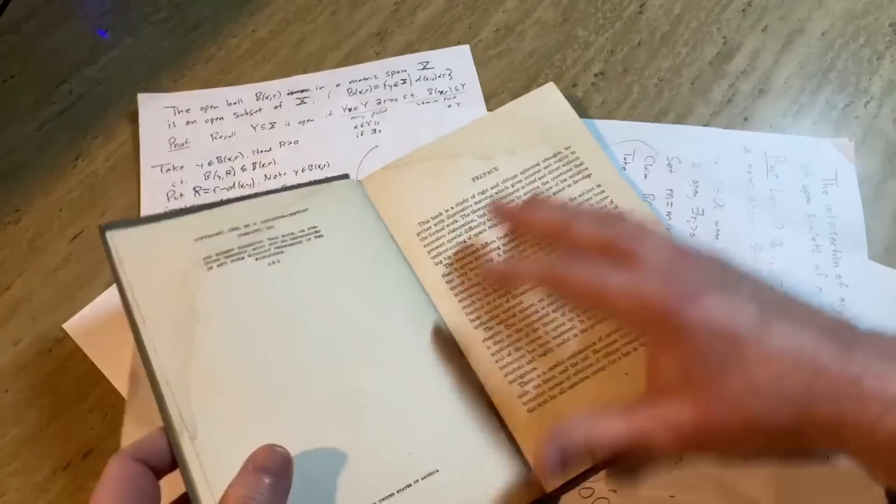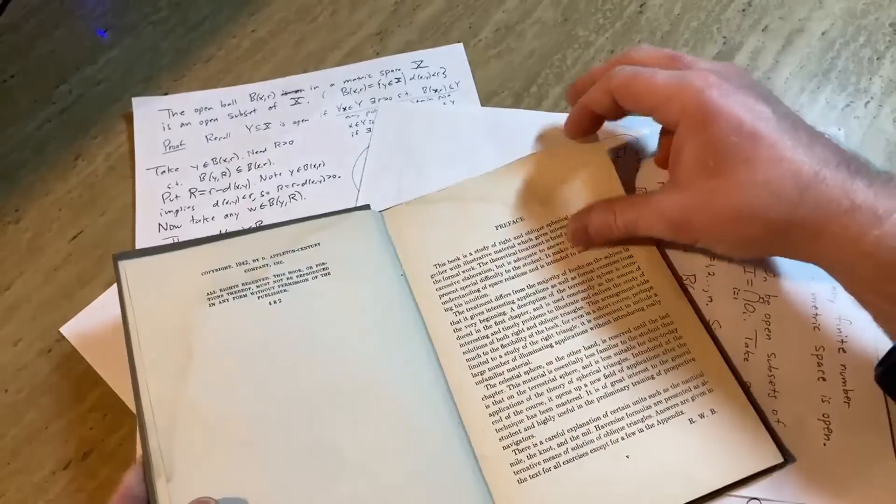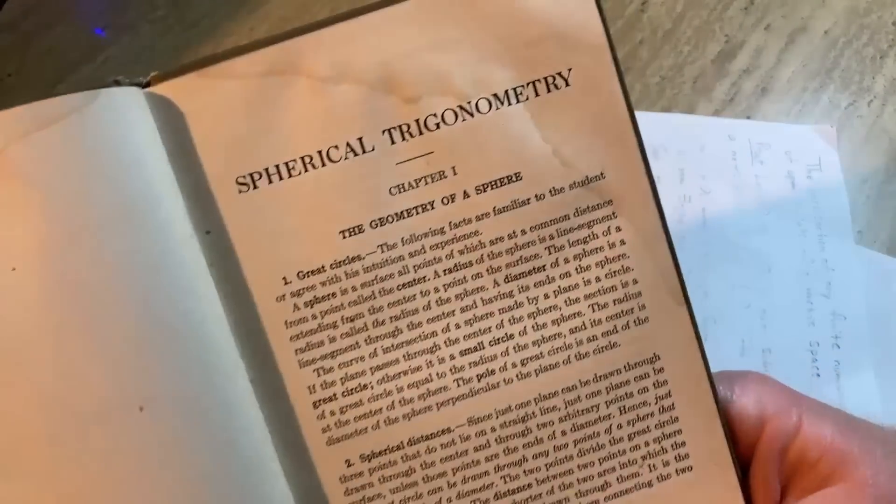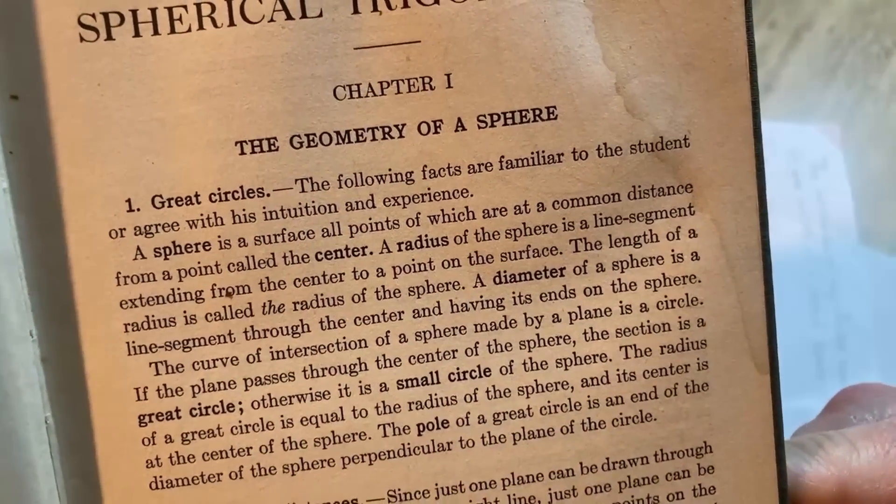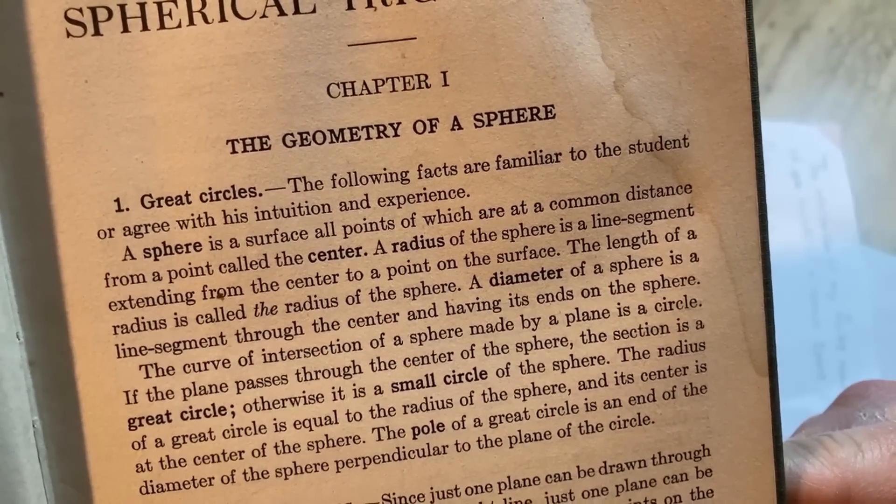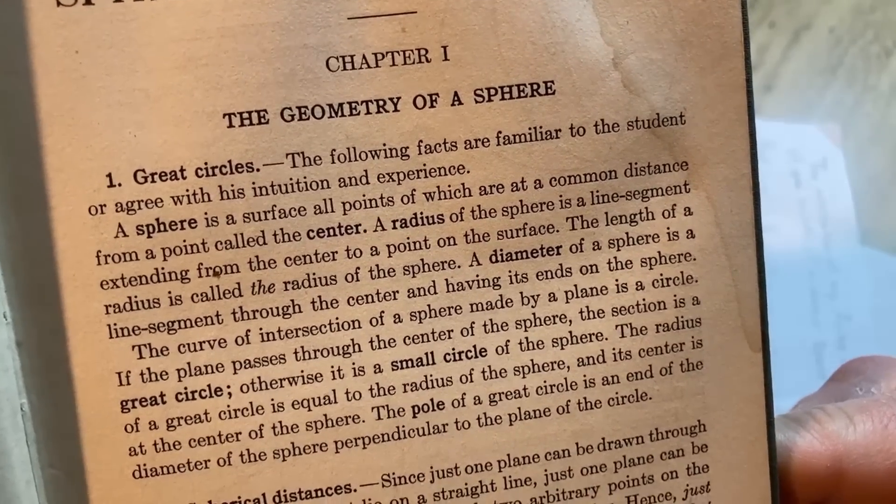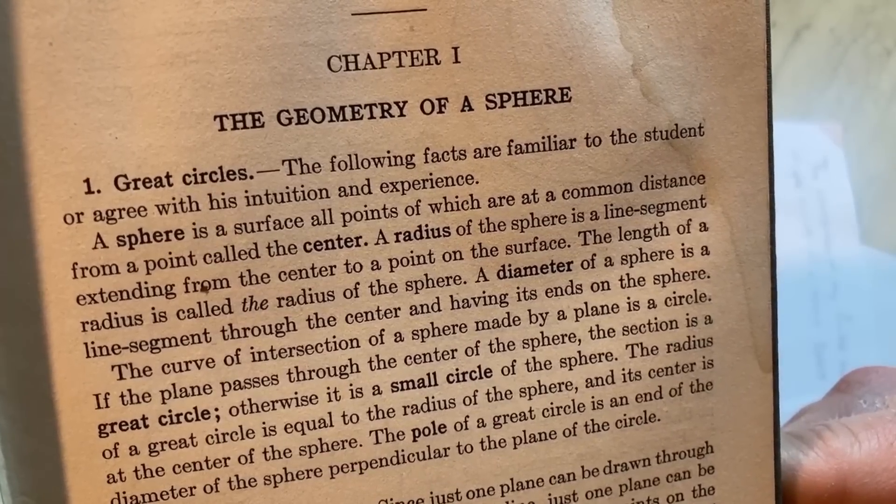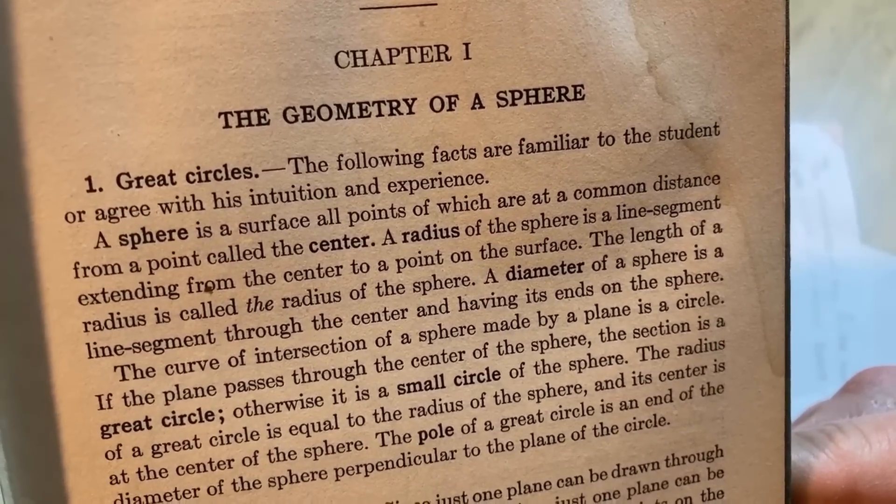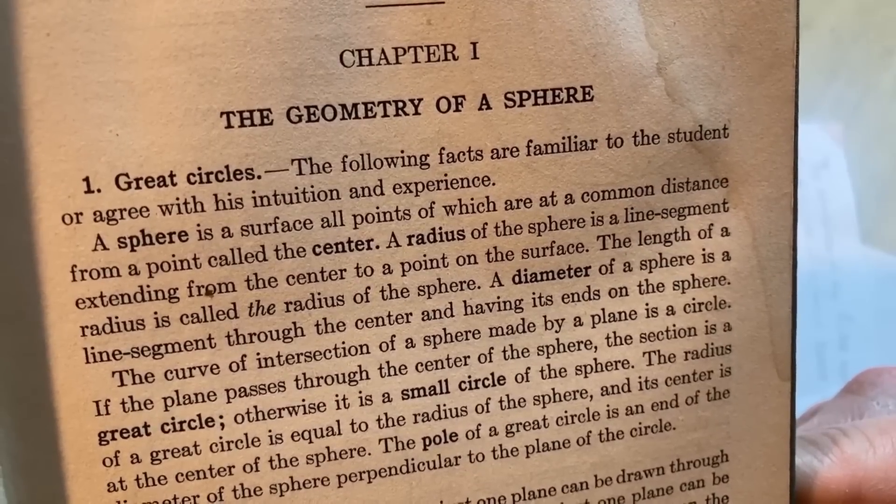42, I think we missed it. It must have been the beginning. Really curious now, but I think it's 42. Yep, yeah, 42, 1942. That's a Nintendo game, I believe. The geometry of a sphere, let's read this. Great circles. The following facts are important to the student or agree with his intuition and experience. A sphere is a surface all points of which are at a common distance from a point called the center.